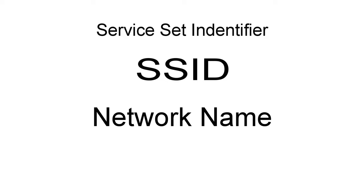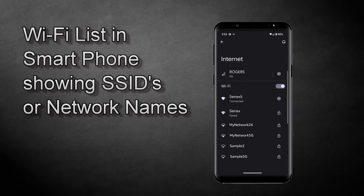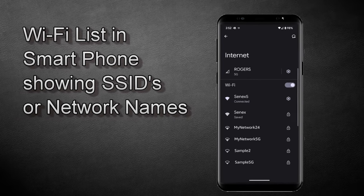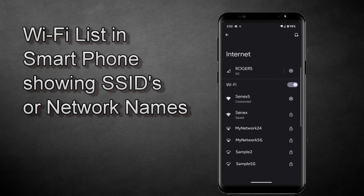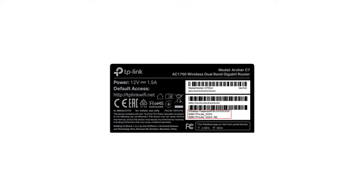Routers use a Service Set Identifier — SSID for short — to name your Wi-Fi network, also referred to as a network ID or name. This is the name you see when you do a Wi-Fi search on your device and it shows you a list of available Wi-Fi networks. Routers come with a default SSID, but you can change it. If you didn't set a custom SSID, you may find it on a label on your router or modem, especially if it was installed by your internet provider.